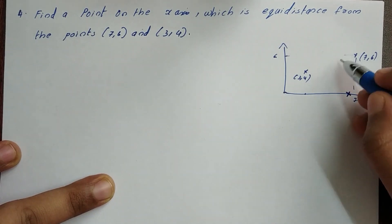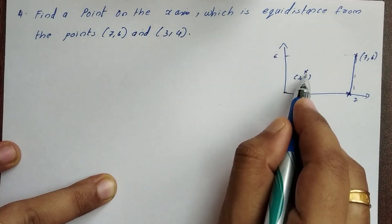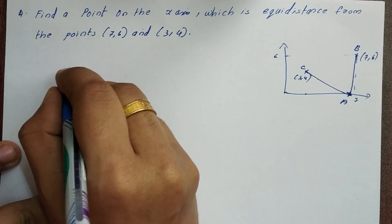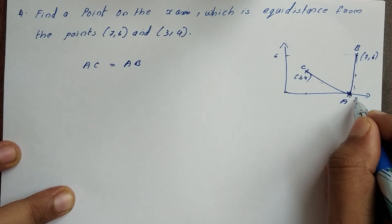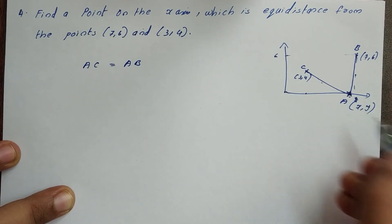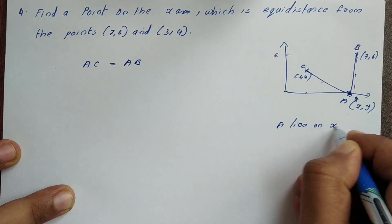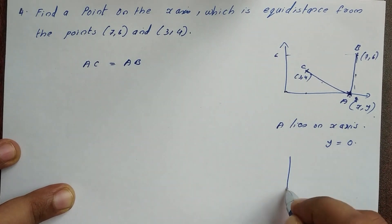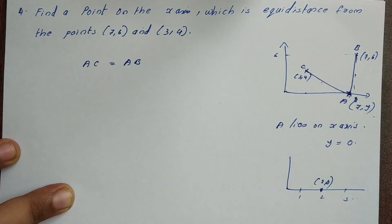Find a point on the x-axis which is equidistant from the points (7,6) and (3,4). Any point on the x-axis has coordinates (x, 0) because the y-coordinate is zero. For example, points like (2,0) or (3,0) lie on the x-axis. So on the x-axis, y is equal to 0.